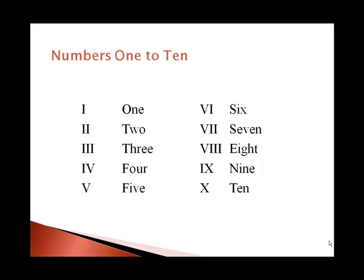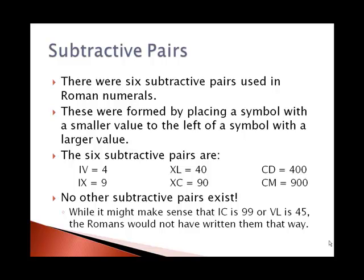The subtractive pairs, there were six different subtractive pairs used in Roman numerals. These are always formed when you have a symbol with a smaller value to the left of a symbol with a larger value. The six of those are IV = 4, IX = 9, XL = 40, XC = 90, CD = 400, and CM = 900.